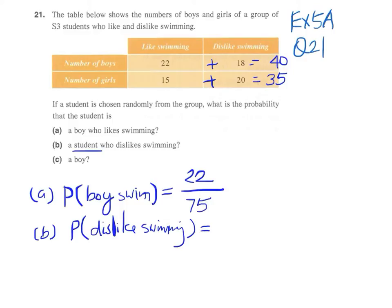The denominator will be 75, and who dislikes swimming? We have two parts here.